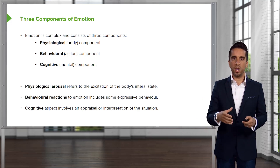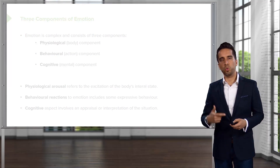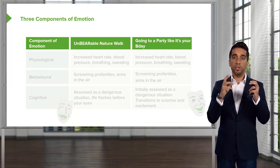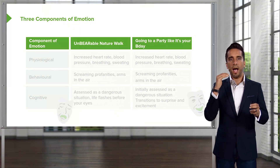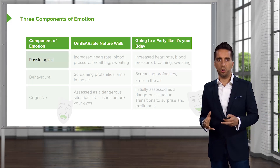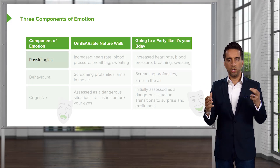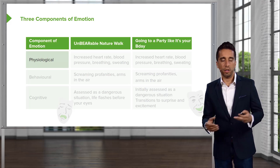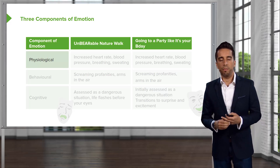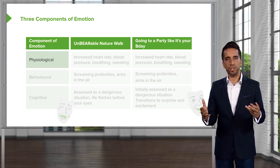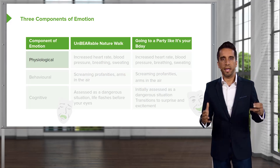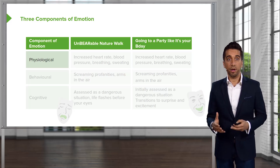Those three together will shape our emotion. So let's walk through an example. We have two different scenarios and we're going to walk through how each component is going to react and respond to that scenario. Scenario number one: you are going for a walk and you decide to take a shortcut through the forest. As you're walking through the forest, you are faced with a large, man-eating, brown, hairy bear.